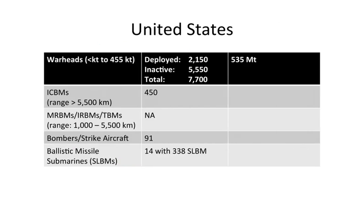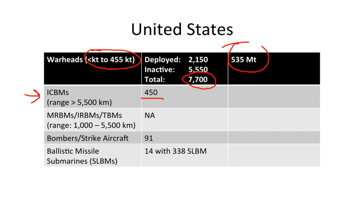Here's the United States. Again, the warhead range is between sub-kiloton and 455 kilotons, with a total of 7,700 warheads and about 535 megatons of explosive power. The United States also has a triad, and they have ICBMs — 450 Minuteman III.